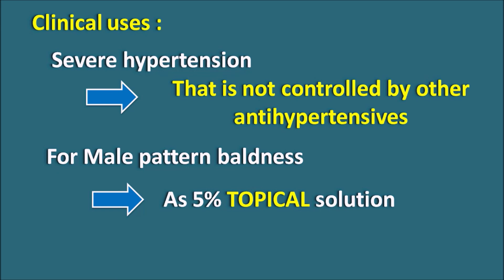To summarize: Minoxidil is an ATP-sensitive potassium channel activator. These channels are present at various organs, but Minoxidil's action is mainly on vascular smooth muscle, where it produces vasodilatation by activation of ATP-sensitive potassium channels. This drug also promotes hair growth by increasing cutaneous blood flow and increasing cell proliferation at the hair follicles, which is why it can be used as a topical preparation for male pattern baldness.